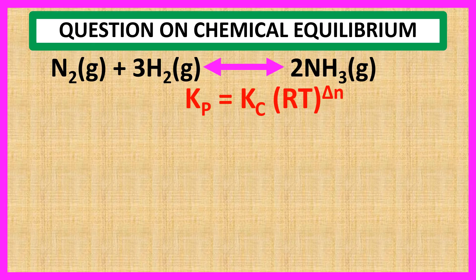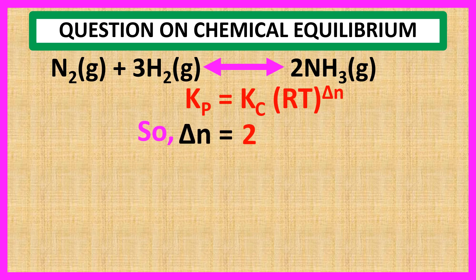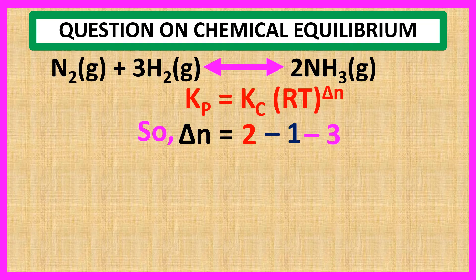At first, we calculate the value of delta N. So, delta N is equal to 2 for 2 moles of gaseous products NH3 minus 1 for 1 mole of gaseous reactant N2 minus 3 for 3 moles of gaseous reactant H2, which equals minus 2.